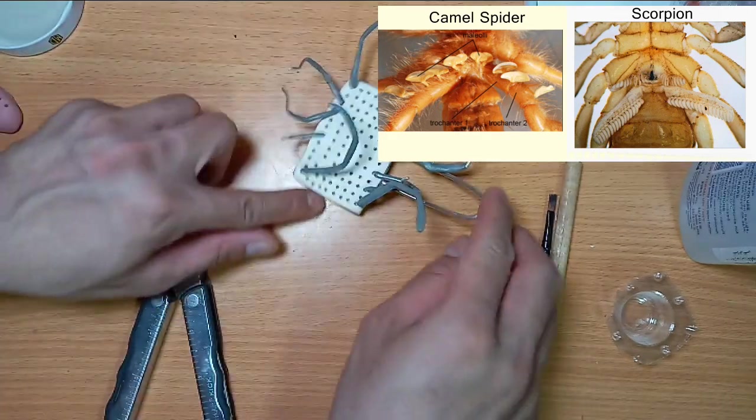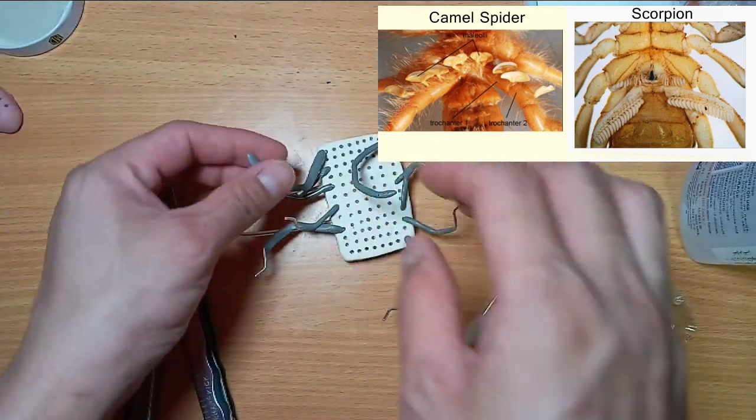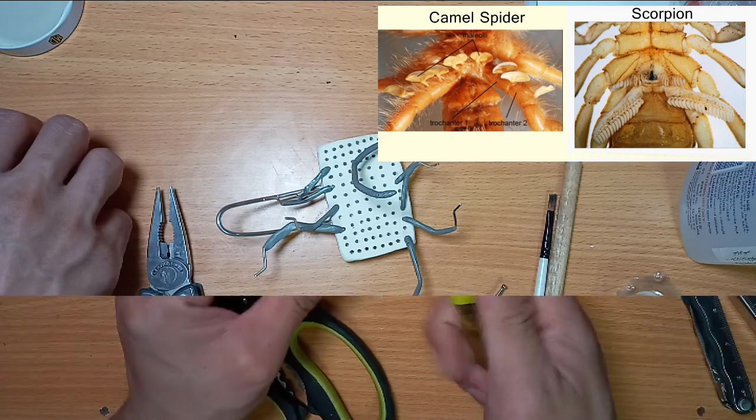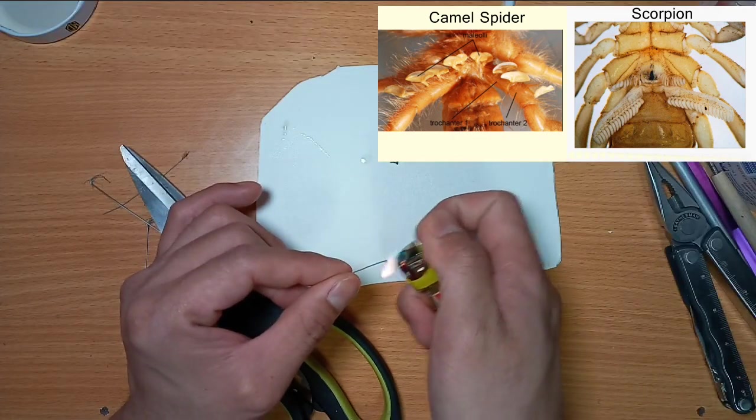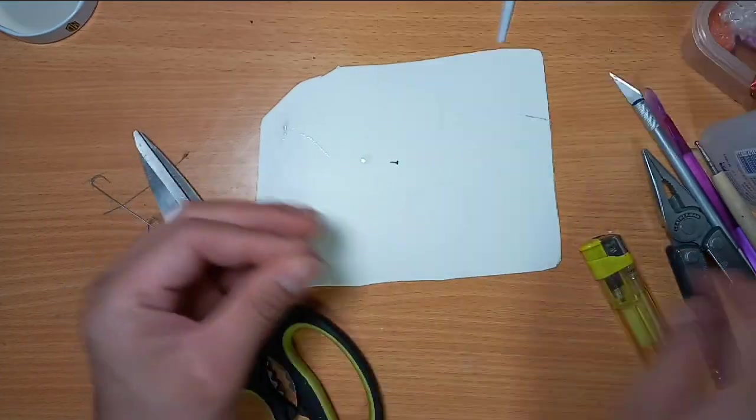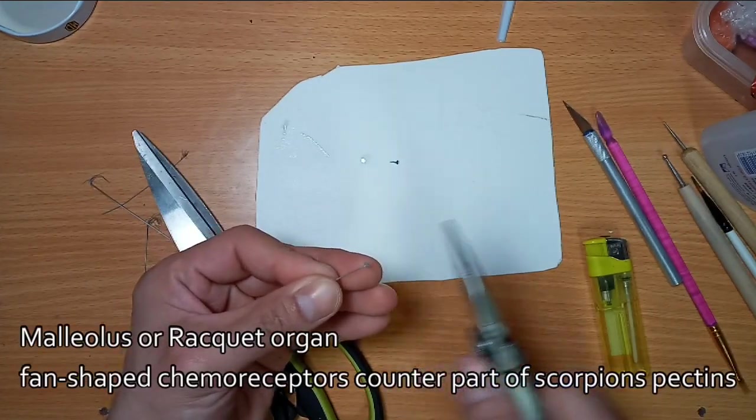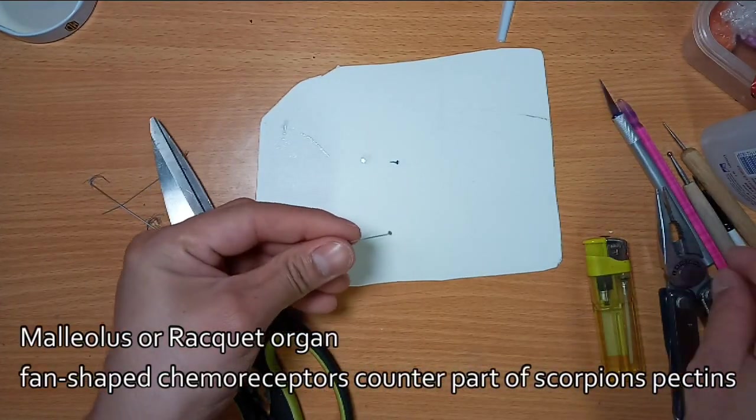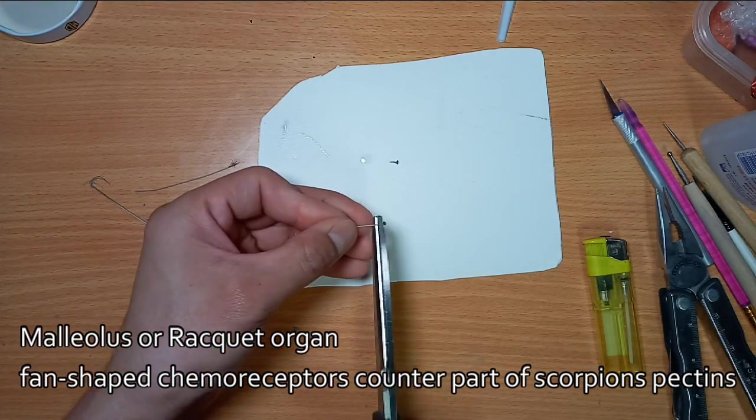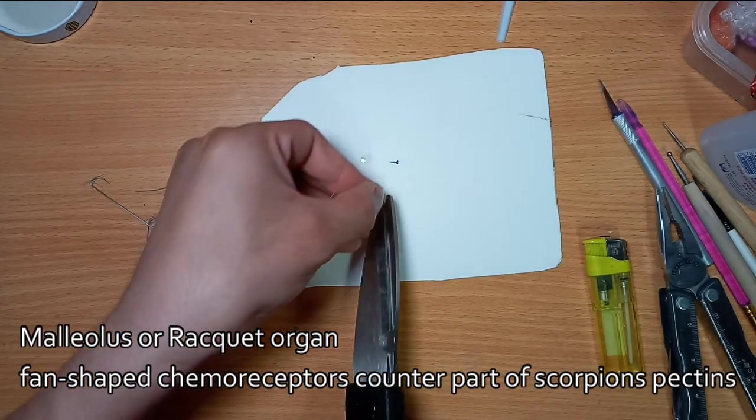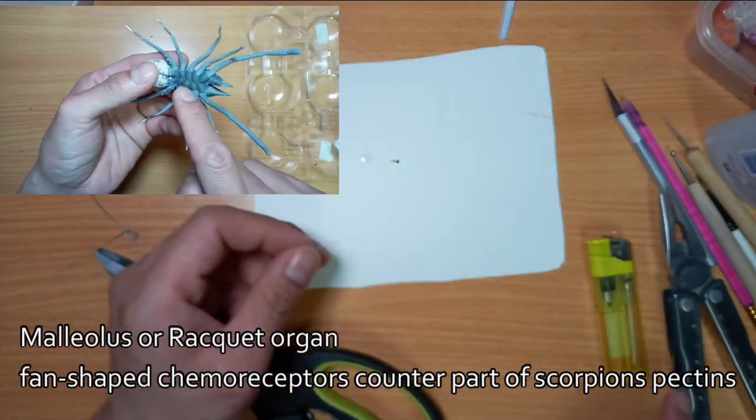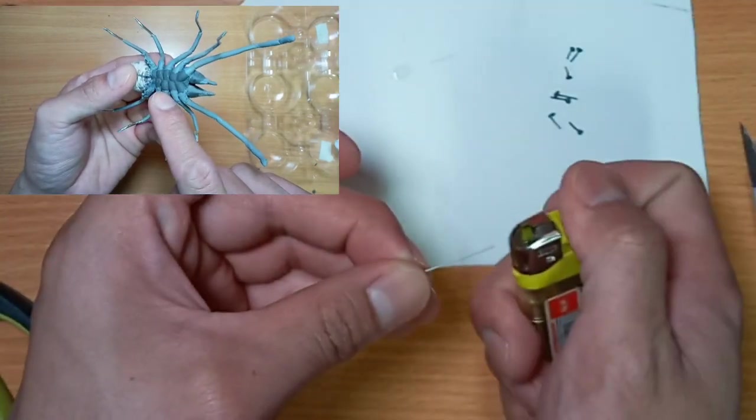And as I've done all the legs and baked them, we're ready for assembly. I did this malleolus, or this fan-shaped chemoreceptor, also called racket organ, out of plastic bristles. These malleoli are the counterpart of scorpion pectins and they receive and transmit vibration signals through chemical substances.